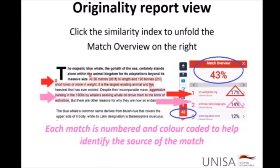When you open your originality report — everything explained from this point is detailed in your UNISA student guide with images and arrows showing exactly where to click — you have to click on your percentage to open the originality report, and then click on the similarity index to unfold the match overview on the right-hand side. In this example, the 43 percent circled is what we refer to as the similarity index.